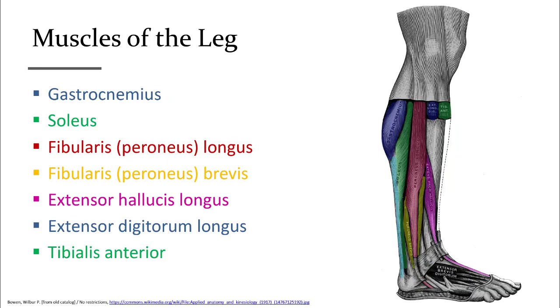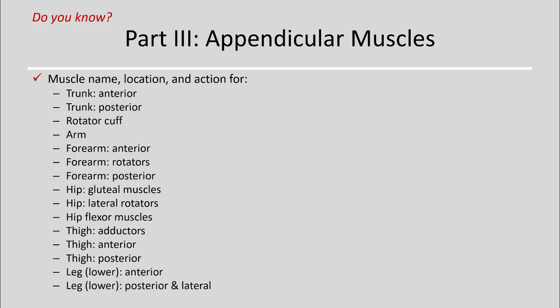These muscles can all be viewed from the lateral perspective. From posterior to anterior, we see gastrocnemius in blue, soleus in green, fibularis or peroneus longus in dark red, fibularis or peroneus brevis underneath it in yellow, extensor hallucis longus in pink, extensor digitorum longus with its belly cut in dark blue, and tibialis anterior also with its belly cut in green. For the appendicular muscles, you should know the name, location, and action, and be able to identify them by diagram or description for each of the muscles discussed.